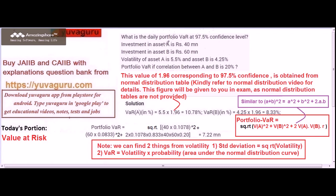How we have to approach the problem: find the VAR of A, find the VAR of B, then find the VAR of A and B combined. For VAR of A — the volatility is 5.5% and the confidence level is 97.5% — meaning volatility won't go beyond 5.5% up to the confidence level of 97.5%.